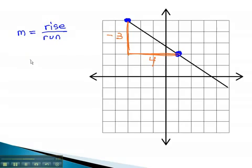Our slope is rise over run, we rose negative 3, and we ran 4. Notice when the graph went downhill from left to right, the slope, or rate of change, was negative.